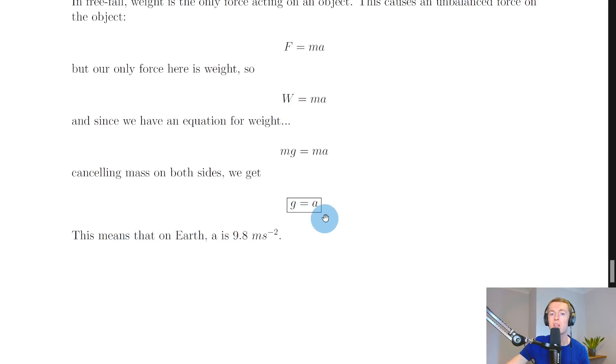This tells us that gravitational field strength g is equal to acceleration due to gravity. Since gravitational field strength is 9.8 newtons per kilogram on Earth, that means acceleration due to gravity also has a value of 9.8, but just different units—9.8 meters per second squared. This is really useful when we're doing things like projectile problems because we can think about objects moving downwards with an acceleration of 9.8 meters per second squared.